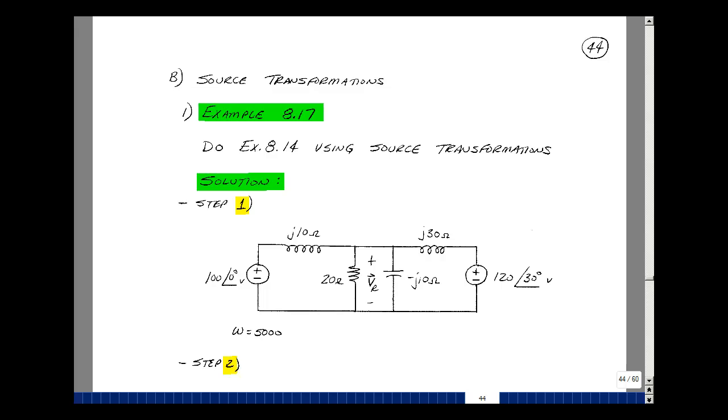Now, we can do that because when we proved source transformations in the time domain, we used Ohm's law and Kirchhoff's laws to do the proof. So let's go back to that example. It was on page 39. Let's grab the Step 1 equivalent circuit in the frequency domain.